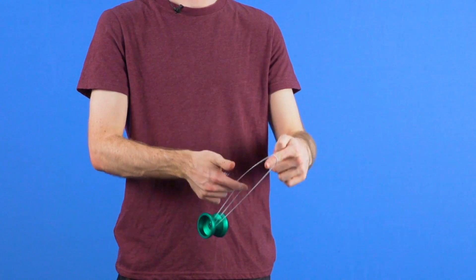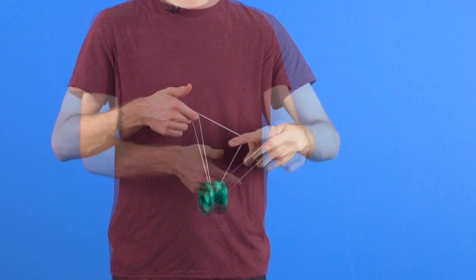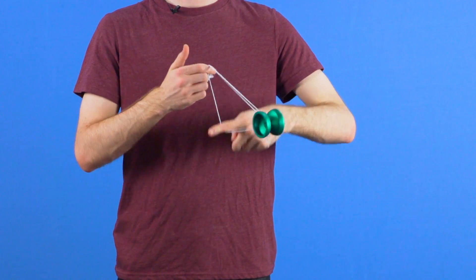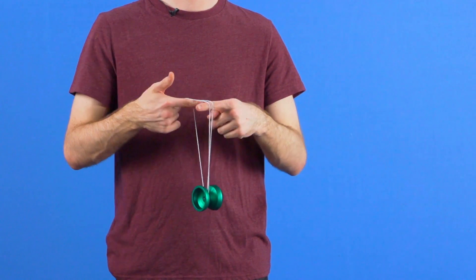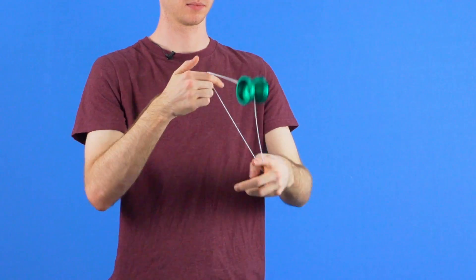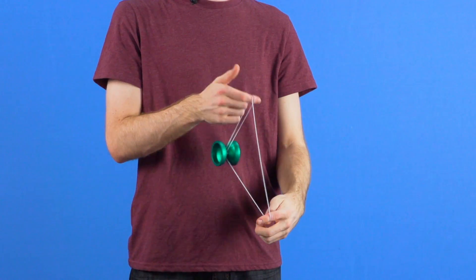Within these tricks, we've found five core concepts that are used in Front Style Speed Combo, and these concepts are Rolls, Hits, Passes, Pops, and Boings.